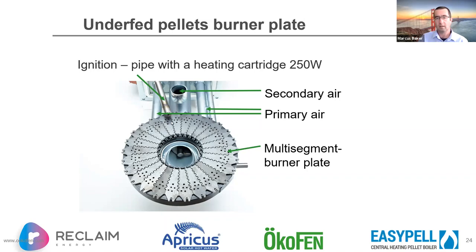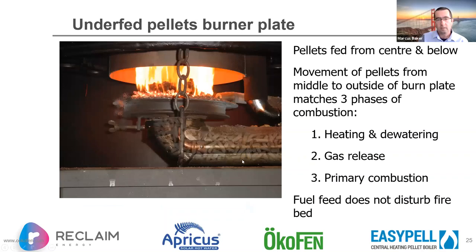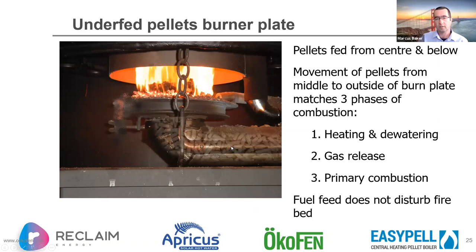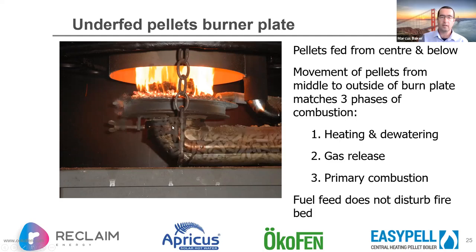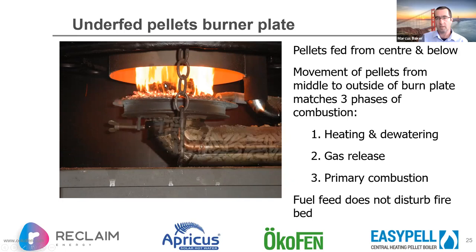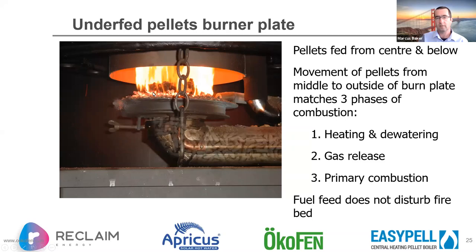You can see the ignition cartridge — a small electric igniter with forced air producing a jet of very hot air using only 250 watts. Because air is blown over it continuously, there are no overheating issues. Primary and secondary air comes up through tubes, and the whole rear assembly is essentially an air box. In the animation you can see pellets being forced through the pipe, pushing up and moving from the centre outwards — the underfed grate principle.